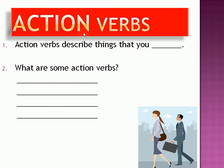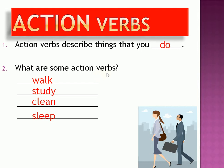But before we do that, we need to talk about action verbs. Action verbs describe things that you do. What are some action verbs that we can use in our writing? Walk, study, clean, and sleep. I use the word action verb to help us understand that the other kind of verb is the to be verb. For example, 'I am happy,' which is the to be verb. So when I say the word action verb, I'm actually differentiating between most action words and the to be verb.